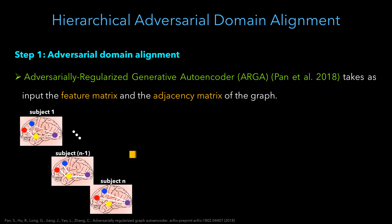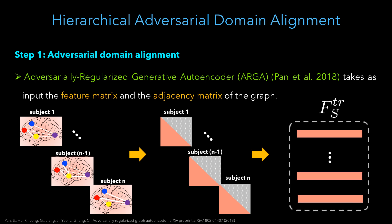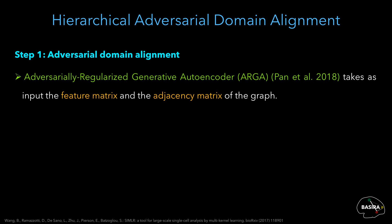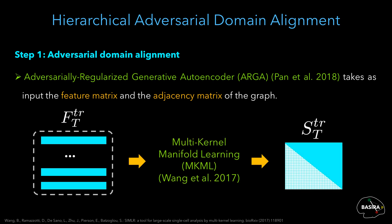Each subject has a source brain graph encoded in a symmetric brain connectivity matrix capturing pairwise morphological dissimilarities between brain regions. We extract and vectorize the upper diagonal part of each matrix, then vertically stack the feature vectors of all training subjects to get the FSTR matrix representing the training source graphs. On the other hand, we propose to use the multi-kernel manifold learning algorithm, or MKML, to learn the STTR similarity matrix of the training target graphs. This algorithm uses multiple kernels to learn the similarity between subjects and can efficiently capture the heterogeneous distribution of our brain graphs.